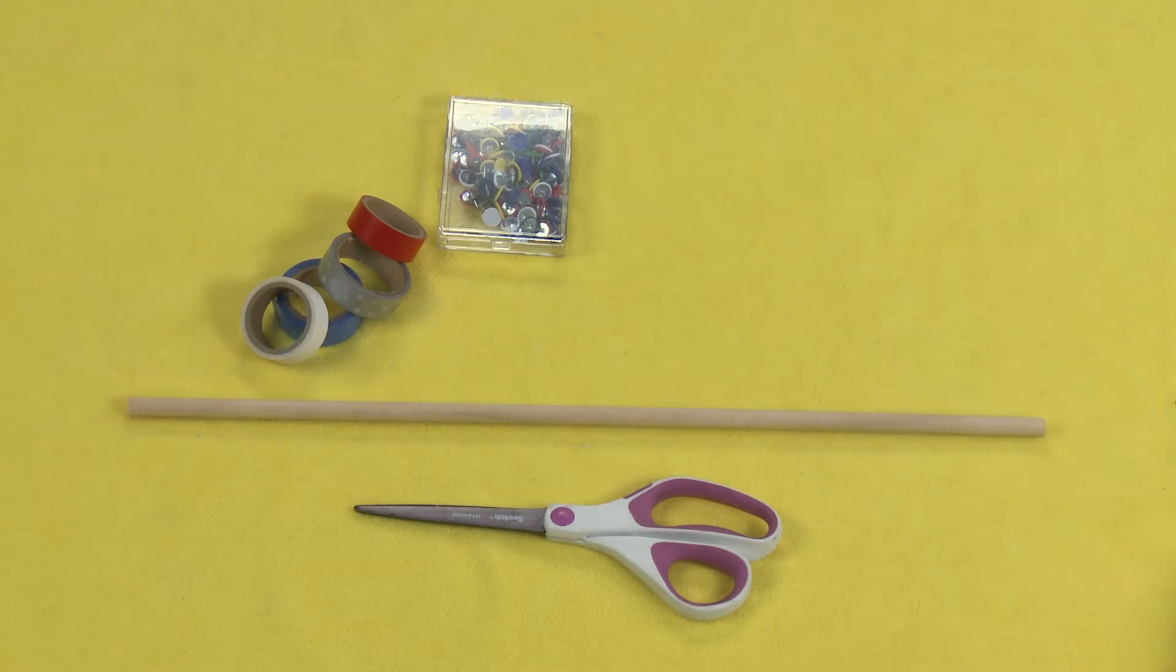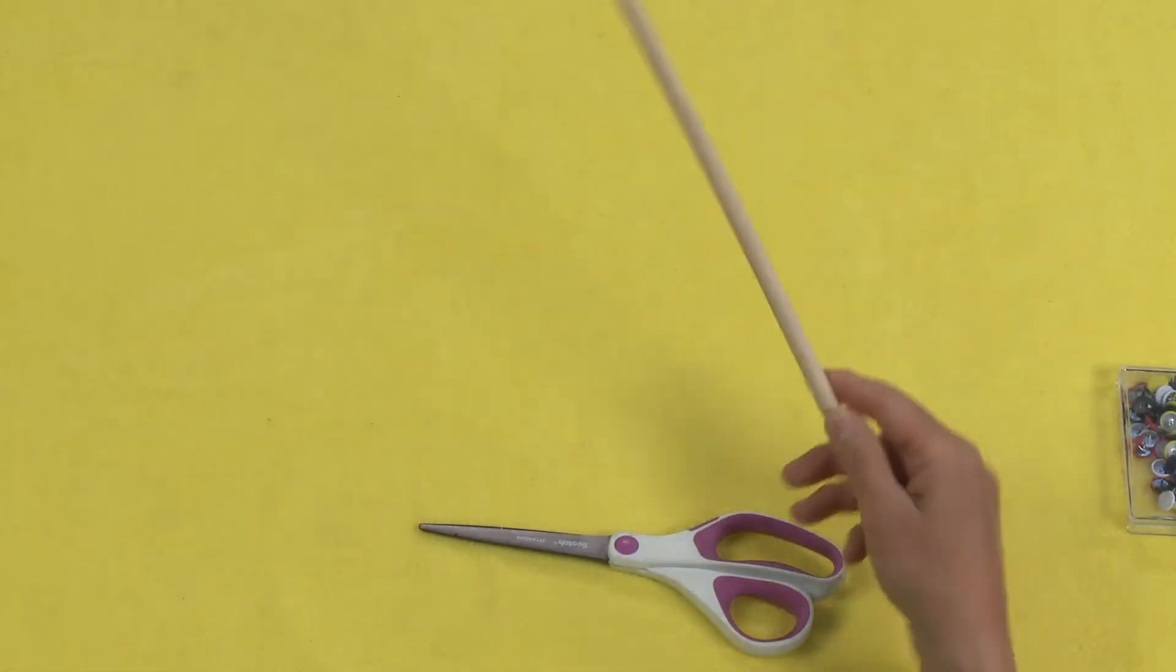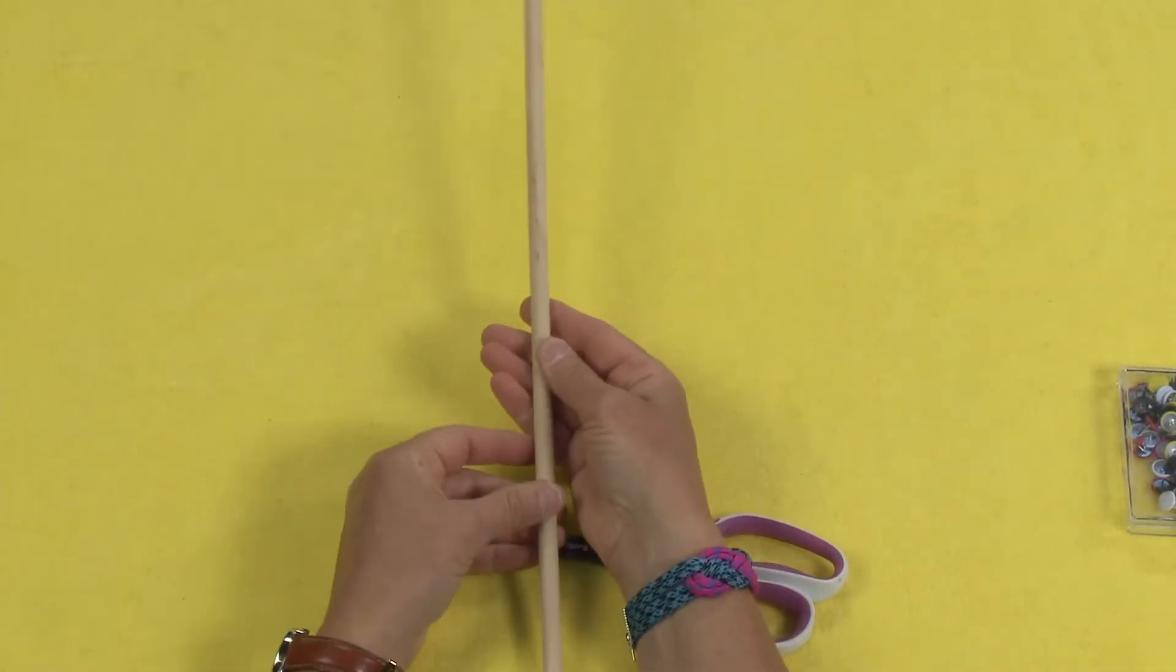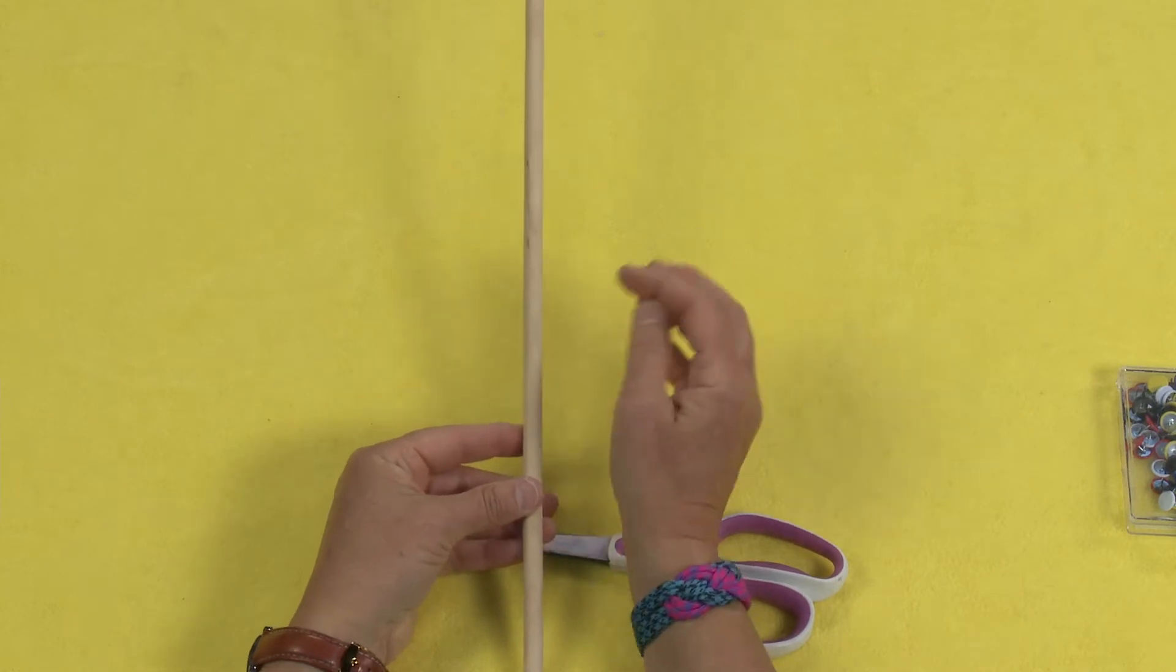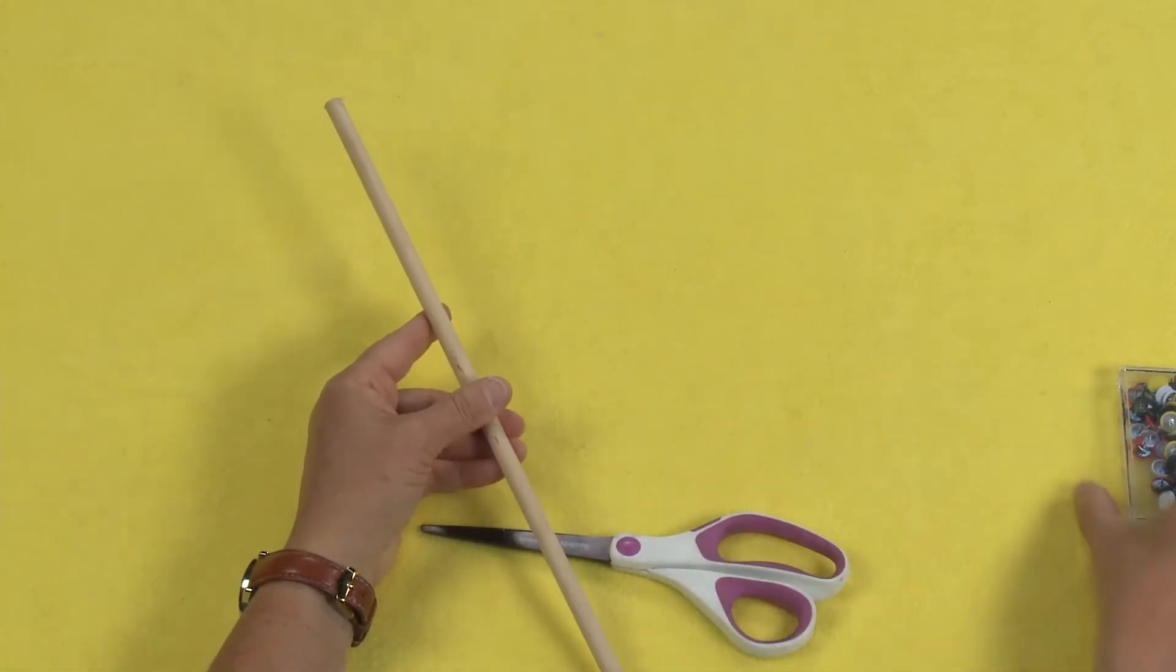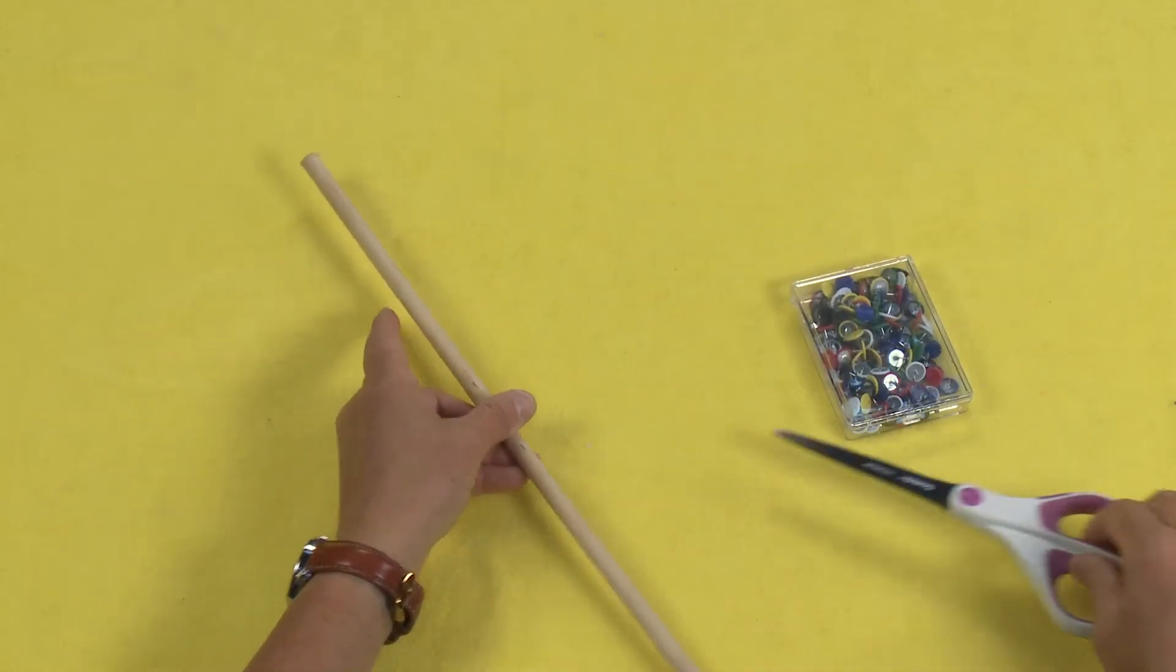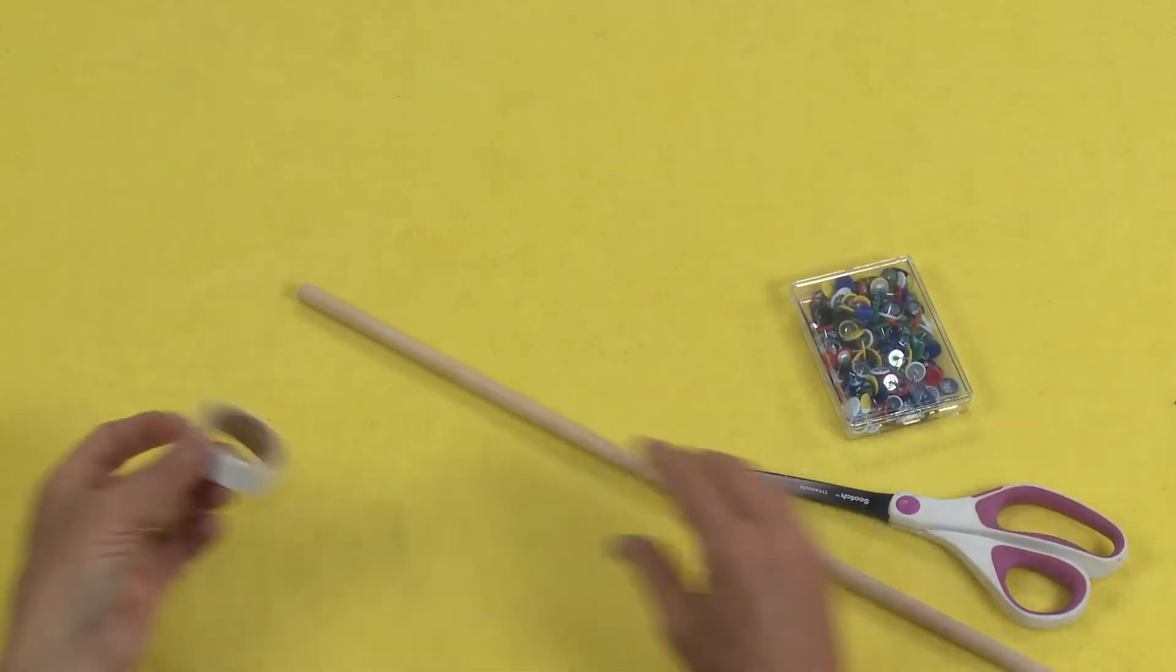Now one thing about the stick, not everybody can get dowels and here's the thing: this works just as well with a pencil like a number two pencil. You just make sure that the eraser is where your ribbons come out because then you can stick your thumbtack right through the eraser and you end up with a very cool ribbon stick that's easy to make.